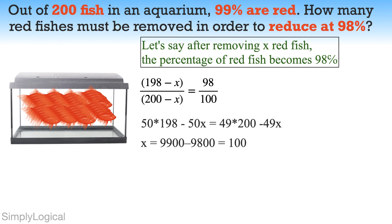It is tough to imagine that we will have to remove 100 fish out of 198 red fish to bring the percentage down by just 1% in a total of 200 fish. The key point is that when we remove red fish from the aquarium, we are also decreasing the total number of fish. Had we been converting every red fish taken out to a non-red fish and kept them back in the aquarium, converting only two red fish to non-red would have brought the percentage of red fish down to 98%. When something is subtracted from both the numerator and denominator, the overall effect on the fraction is quite small.